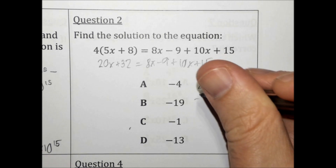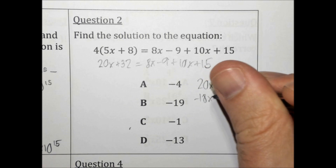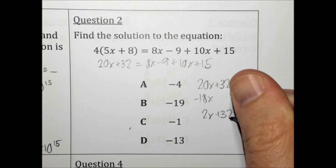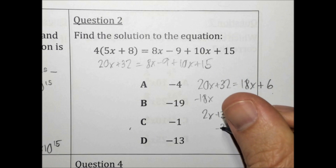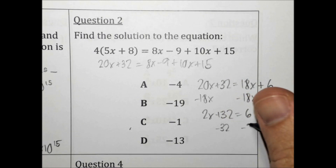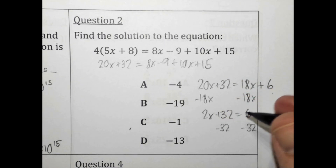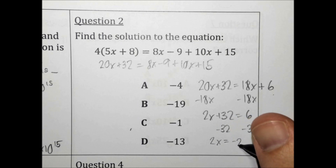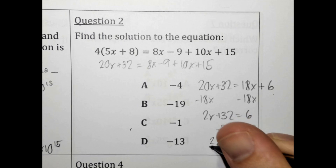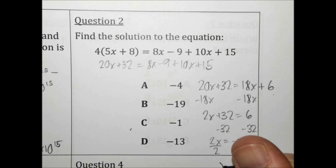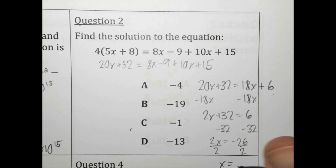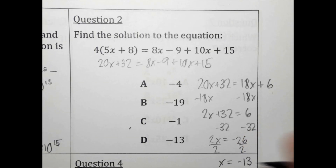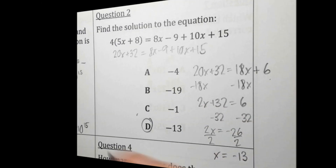When you have variables on both sides, you move the smaller one. So we're going to subtract 18x from both sides to get 2x plus 32 equals 6. Subtract 32 from both sides and we get 2x equals negative 26. Divide by 2. We get x equals negative 13. Choice D.